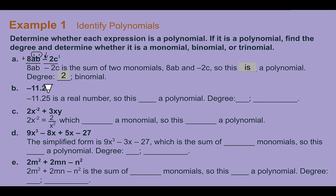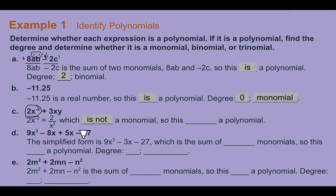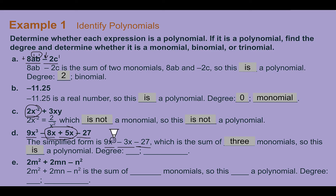Part B: negative 11.25. This is also a polynomial with a degree of zero since there is no variable, and since there's only one term, it's a monomial. Part C: if we rewrite the first part, 2x to the negative 2 is equivalent to 2 over x squared. A monomial cannot have division in it, so this is not a monomial and therefore not a polynomial — a negative exponent means it is not a polynomial no matter what the rest looks like. Part D: 9x cubed minus 8x plus 5x minus 27 simplifies to 9x cubed minus 3x minus 27. All exponents are positive, so it's a polynomial. Highest exponent is 3, making it a third-degree or cubic trinomial.